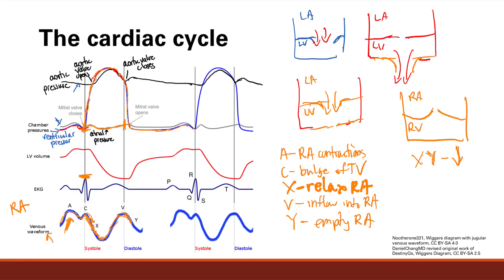X and Y happen to be in alphabetical order, which is helpful. The little bumps in the curve are A, C, and V — also in alphabetical order. A is right atrial contraction, C is the bulge of the tricuspid valve, and V is the inflow of blood into the right atrium with the tricuspid valve closed. X and Y are the two pressure decreases. Understanding this graph tells you what's going on with the heart.